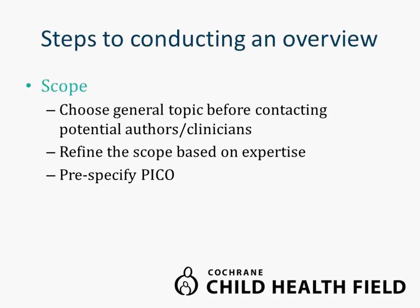Just as when conducting a systematic review, the first step when conducting an overview is to clearly define the scope. What the Child Health Field does is generally choose a general topic before contacting potential authors and clinicians who are experts in that topic. The clinicians then refine the scope based on their clinical expertise, pre-specifying the populations, interventions, comparators, and outcomes of interest. Refining the scope and pre-specifying the PICO components ensures that future steps are driven by a well-defined clinical question and not by whatever data appears in the individual reviews.